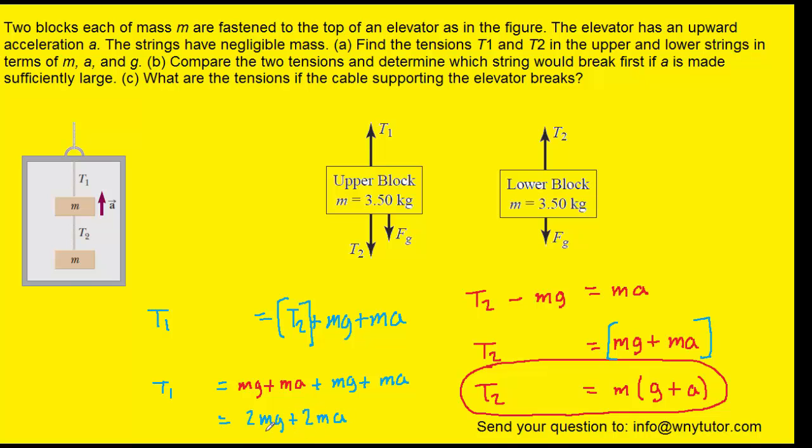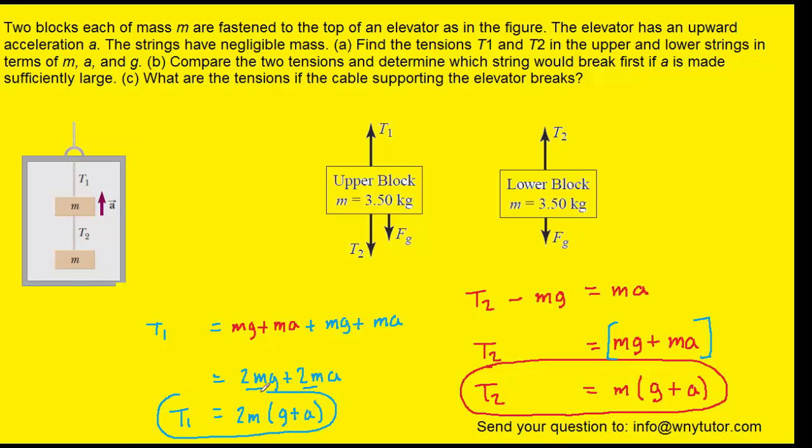And if we wanted to get fancy, we could factor out a 2m from both terms. So if we did that, we would put the 2m here, and then we would have g plus a. And so you'll notice we've accomplished our goal. We've expressed T1 in terms of both ma and g, and we've expressed T2 also in terms of ma and g. Also, if you look very carefully, you can see that the result for T1 is basically the same as the result for T2. The only difference is that we have this extra 2 in the result for T1. So what that means is we can actually label T1 as 2 times the tension T2. This would be another way of expressing the result, and it would be equivalent.